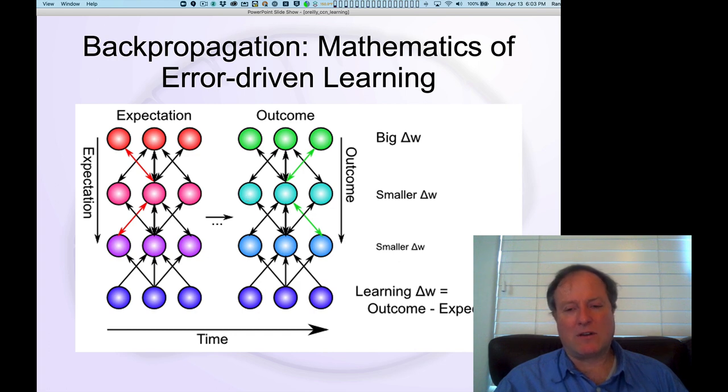And this is the critical principle that, in fact, just using the difference in activity between the minus phase and the plus phase at every level in this network actually produces mathematically the correct result. And that's quite an interesting outcome.